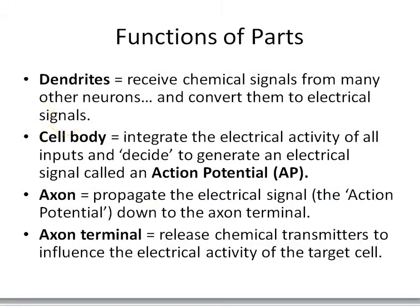These are the four parts of a neuron we need to know. Dendrites receive chemical signals from many other neurons and convert them into electrical signals — that's the language of the brain. The cell body integrates the electrical activity of all the inputs and metaphorically decides to generate an electrical signal called an action potential. The axon, the output cable, propagates that electrical signal down to the axon terminal. And the axon terminal releases chemicals called neurotransmitters to influence the electrical activity of the target cell.